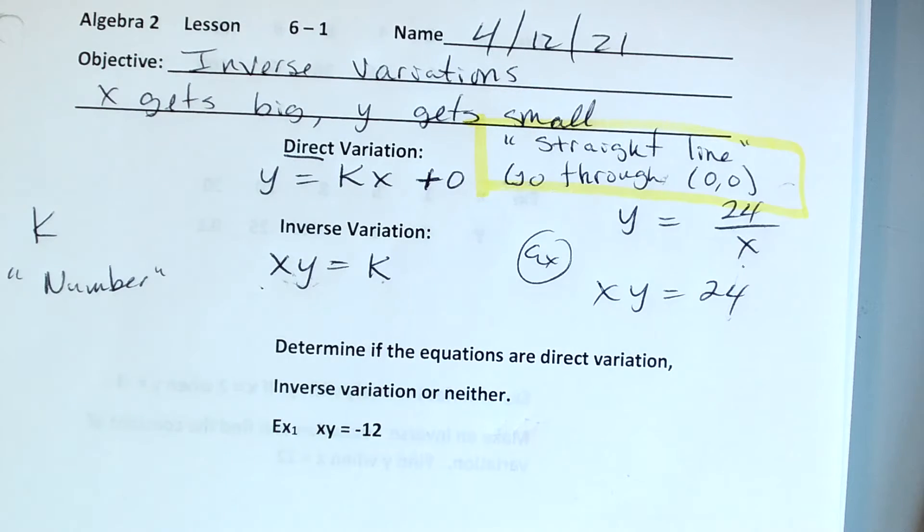Here's an example of direct variation. You're in your car and you're driving 60 miles an hour. Every hour you go 60 miles, another 60 miles. So directly as time increases, your distance increases. They're both going up at the same time.